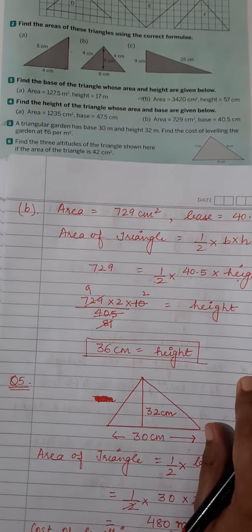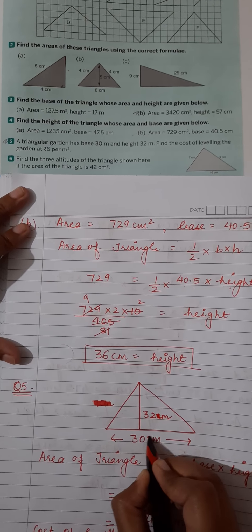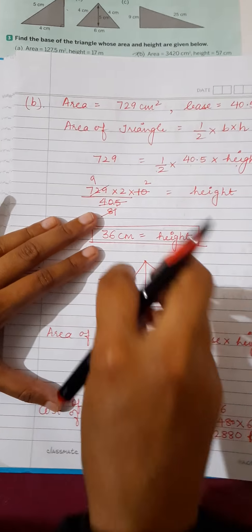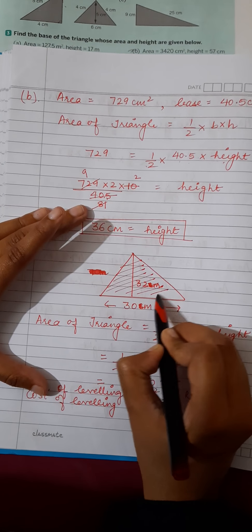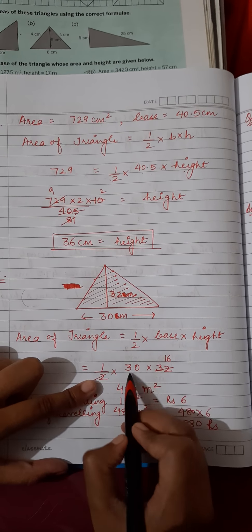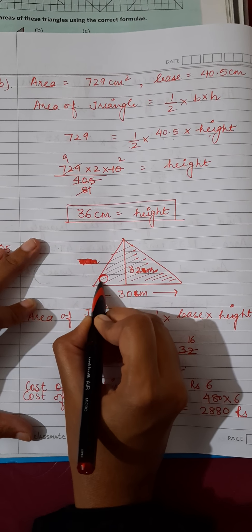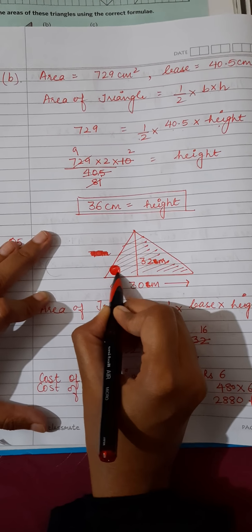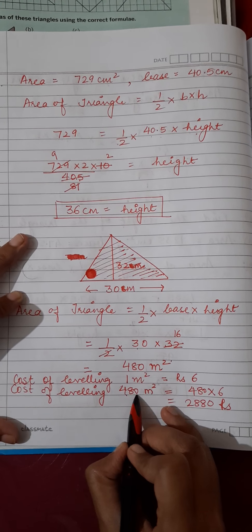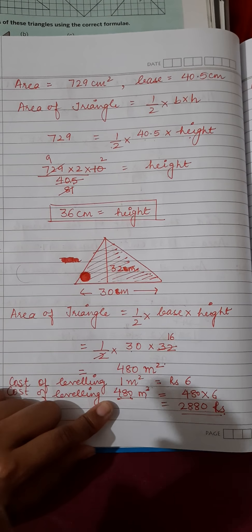Question number five: a triangular garden has base 30 meters and height 32 meters. You have to find the cost of leveling the garden at rupees 6 per meter square. First find the area: half × 30 × 32 = 480 meter square. Then multiply the area by the rate: 480 × 6 = 2880 rupees. Complete this exercise till question number five.